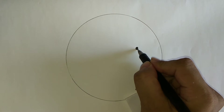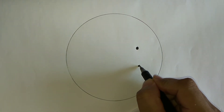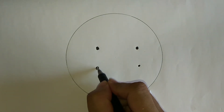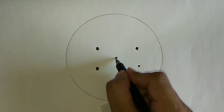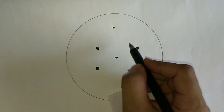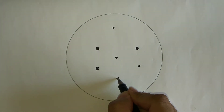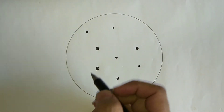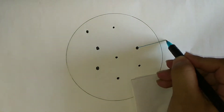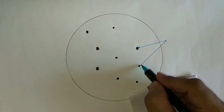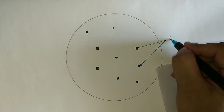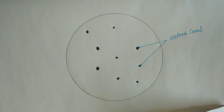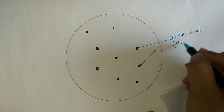Here we are making a black circle. This circle is called an osteone. Each concentric lamellar complex is called an osteone. It is also called the Haversian system. The structural unit of compact bone matrix are the osteones.